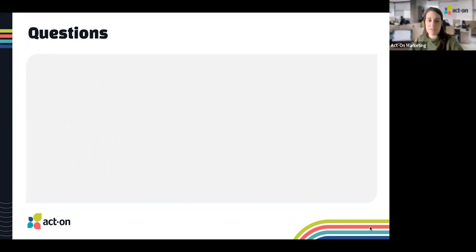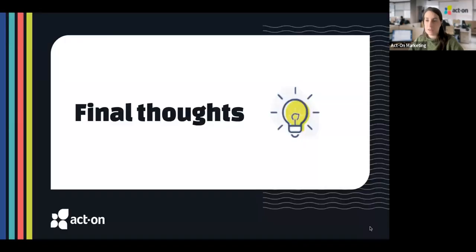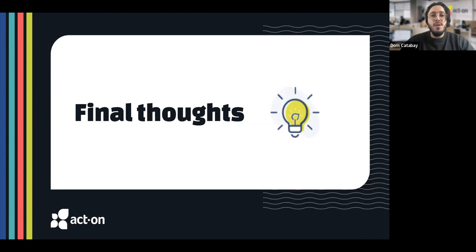We're going to take some questions now, but first: what's a key piece of advice when it comes to lead scoring and finding your best leads? My number-one advice is don't try to solve all your problems at once with your scoring model. It's called a model because you're supposed to go back and iterate using data you capture from your existing model to get better over time. If you try to solve everything at once, you'll get stuck and nothing will get better.